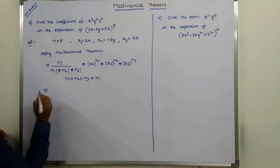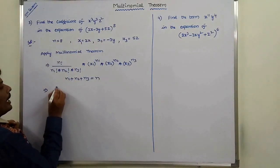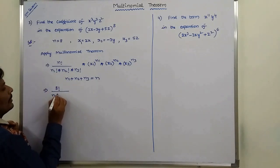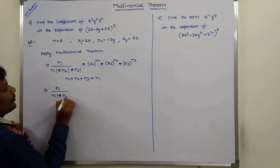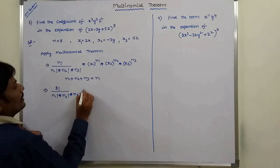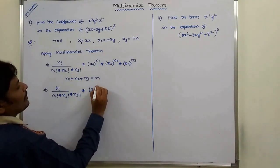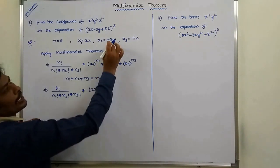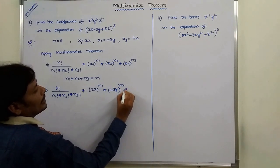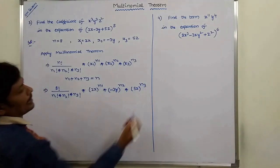According to this, the n value is 8. So: 8 factorial by n1 factorial into n2 factorial into n3 factorial, into x1 value (2x) whole power n1, into x2 value (minus 3y) whole power n2, into x3 value (5z) whole power n3.